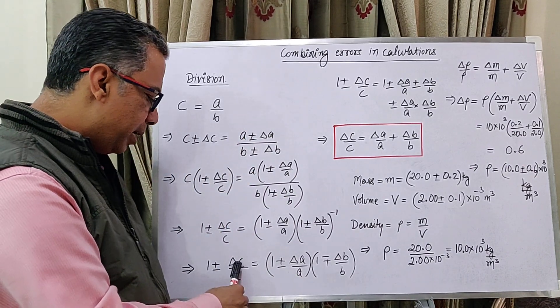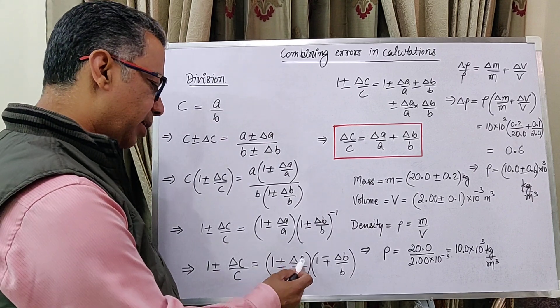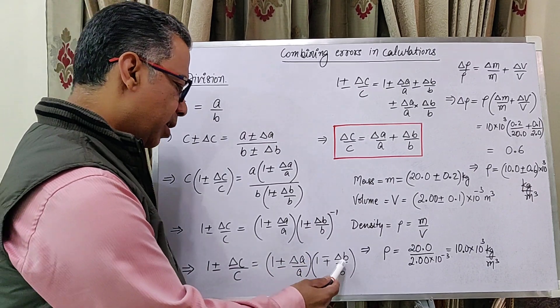So, 1 plus minus delta C by C equals 1 plus minus delta A by A into 1 plus minus delta B by B.